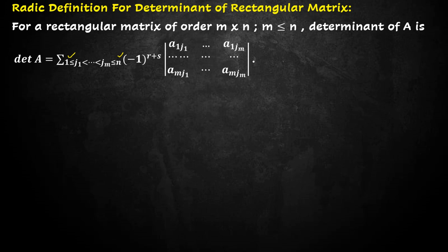r is the sum of rows 1 plus 2 plus 3 up to m, and s is sum of columns j1 plus j2 plus j3 up to jm.